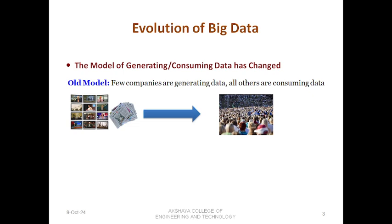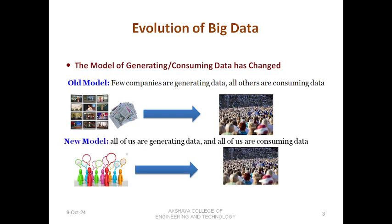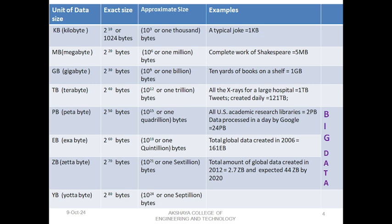Evolution of big data: the model of generating and consuming data has changed. Initially, data dissemination used to be through newspapers or a few media outlets. Now, social media has given power to each and every individual to generate data. In the new model, it is not a specific organization or company generating data — every individual can generate and consume data.